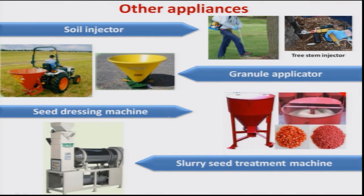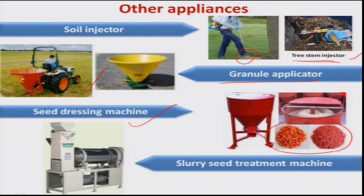Other specific application types include soil injectors for use at the base of tall tree plants, tree trunk injectors for injecting insecticide into coconut trees, granular applicators for applying granular formulations through tractors, seed dressing machines for treating seeds with insecticide before sowing, and slurry seed treatment machines also available for treating seeds.